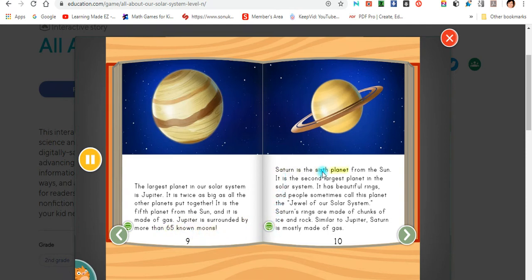Saturn is the sixth planet from the sun. It is the second largest planet in the solar system. It has beautiful rings, and people sometimes call this planet the jewel of our solar system. Saturn's rings are made of chunks of ice and rock. Similar to Jupiter, Saturn is mostly made of gas.